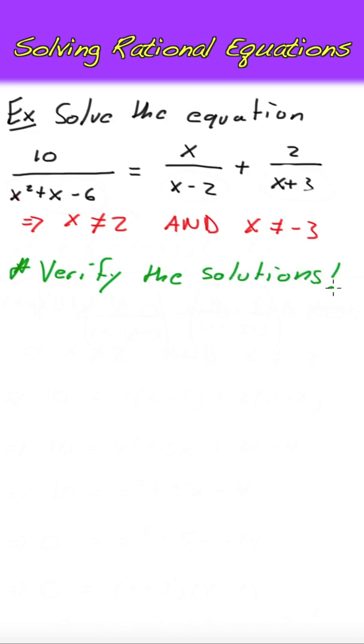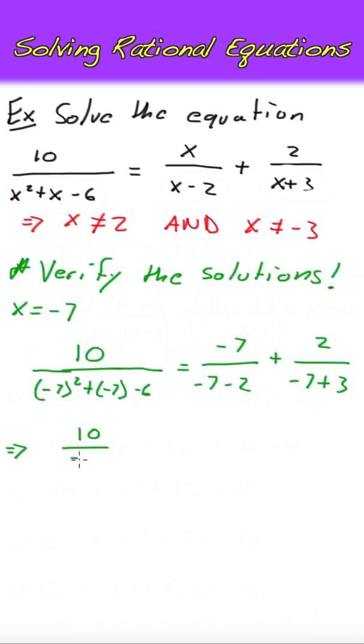We must verify these solutions. While we can confirm negative 7 is a solution by plugging it back into our original equation, this isn't the case with 2. As we noted earlier, 2 causes division by 0 and thus must be excluded.